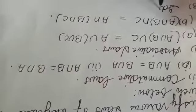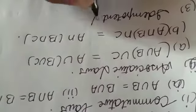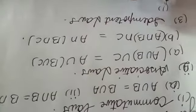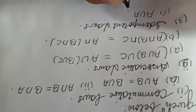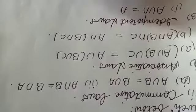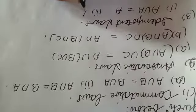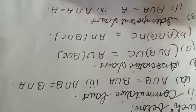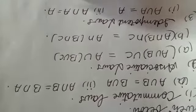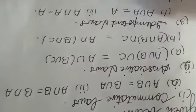The third law is idempotent law. It says that A union A is always equal to A. And A intersection A is also equal to A. That is the idempotent law.